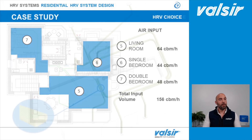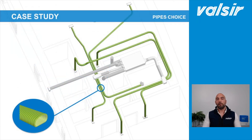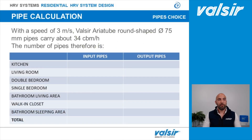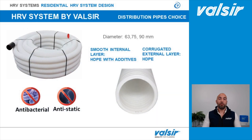Next step: choosing the pipes. Valsir offers a round-shaped pipe and an oval-shaped one. We pick the round pipe with a 75 millimeter diameter, which can carry about 34 cubic meters per hour, allowing us to determine how many input and output pipes are needed per room. Valsir pipes feature a smooth internal HDPE layer with anti-bacterial and anti-static additives, and a corrugated HDPE external layer making them both resistant and flexible — and therefore easier to install.